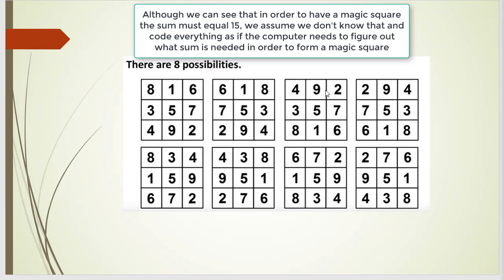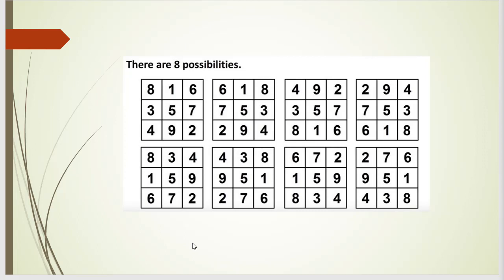Every column of the square has the same sum — in every case it's always 15. For example, 8 plus 3 is 11, plus 4 is 15. Or in a different case, 6 plus 1 is 7, plus 8 is 15. And diagonally it's the same: 2 plus 5 is 7, plus 8 is 15; or the other way, 4 plus 5 is 9, plus 6 is 15.